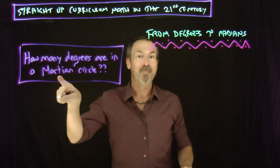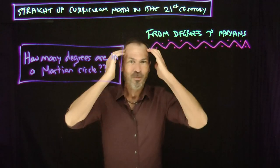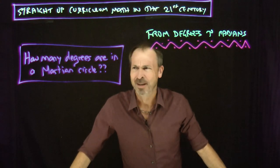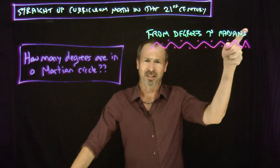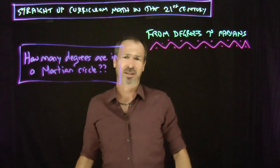In fact, I want to get at that human story by asking first, a very non-human question. How many degrees are in a Martian circle? You might say 360 degrees, because it's 360 degrees in a circle, whether it's Martian or Earthling or not, 360 degrees in a Martian circle.